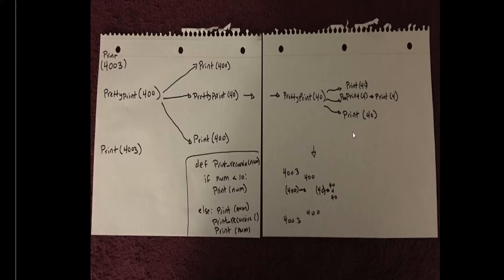Now we're getting to the end of the recursion, because the outcome of pretty print 4 has no more recursion after it — we have a final output, which is just 4. Since 4 is less than 10, it satisfies the base case and simply prints 4. So the outcome of pretty print 4 is just 4. That gives us 40, 4, 40.